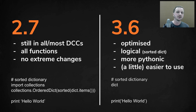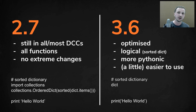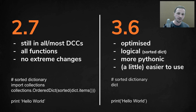That said, 3.6 is more optimized. It has more logic than 2.7 and is more Pythonic — more the Python way of scripting. In some ways it's a little bit easier to use.